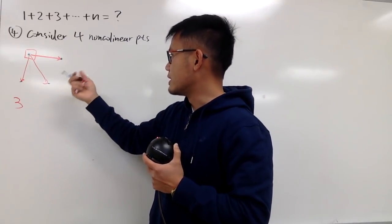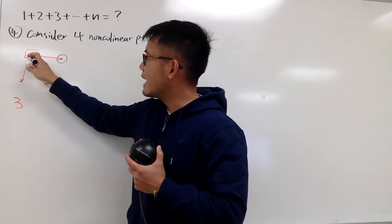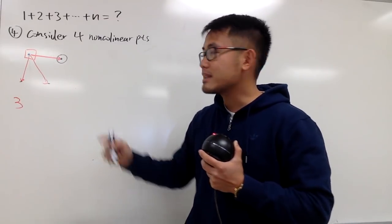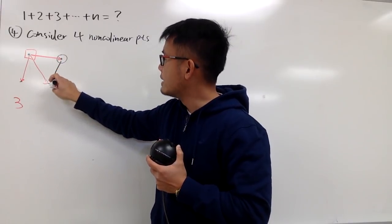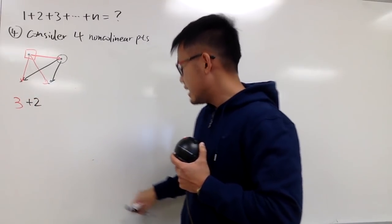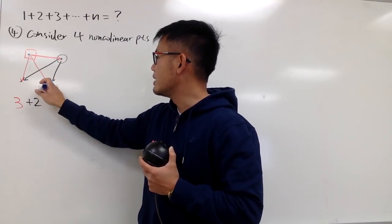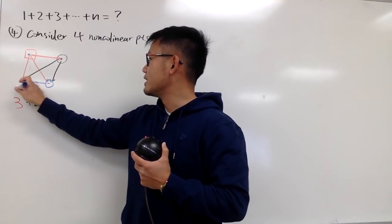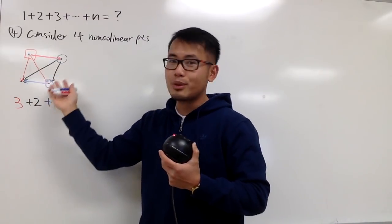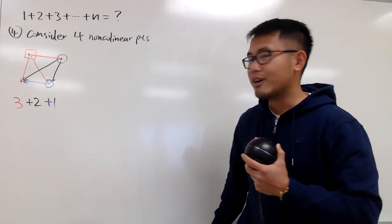We can continue with the same fashion. For this next point, I'm not going to go back because that's the same segment as what we counted already. So if you fix this point, we only have one, two — two segments, so we just add two. And lastly, this is the last point we can select because we can only draw this one more segment. This point is pretty much connected with the rest already. And we have a total of six segments when we have four points.